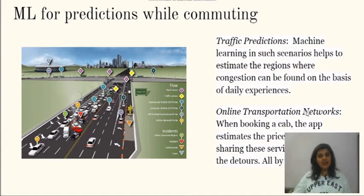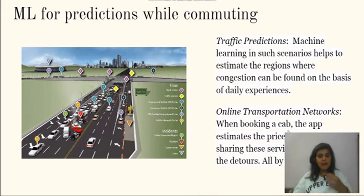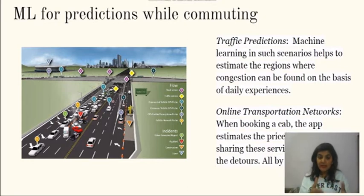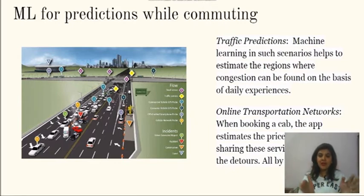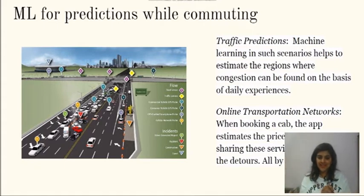Similarly, online transportation networks — when we book an app like Ola or Uber — give you an estimated price for going from one location to another. How? That is due to machine learning. If around 70–80 people are traveling from that position, it takes the average. Daily it trains itself and by the 100th day it gives you correct data. This is how you train a machine to become so intelligent that it behaves like a human.